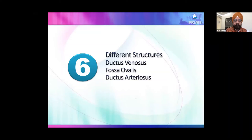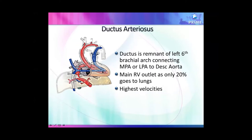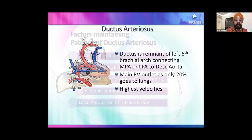In the fetus, critical structures include the ductus venosus, foramen ovale, and ductus arteriosus. The ductus arteriosus is critically important — it shunts right heart blood into the descending aorta. If the ductus arteriosus is absent or narrow, the RV output has nowhere to go and the RV would go into failure. Ductal patency is maintained by prostaglandins generated from the placenta.